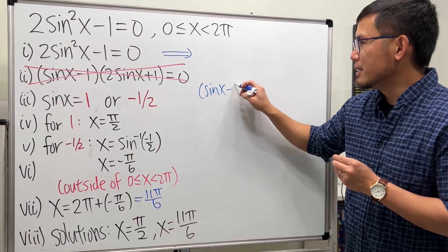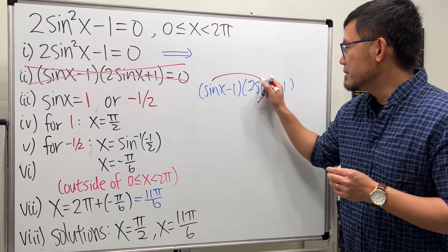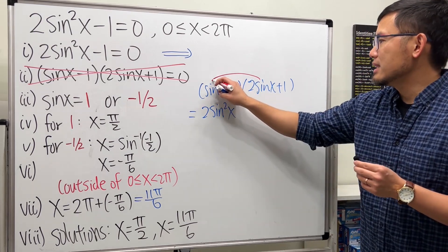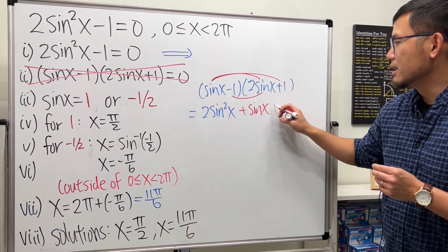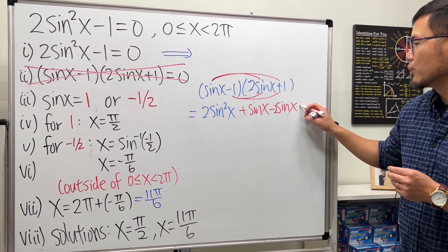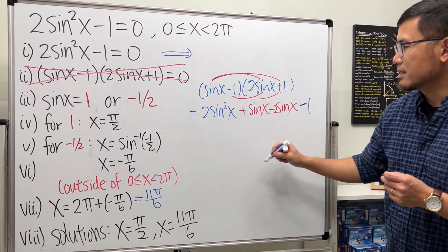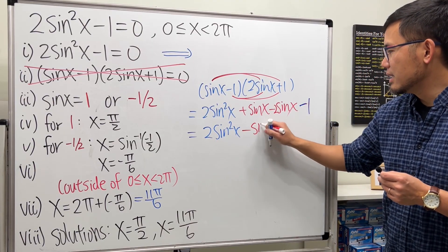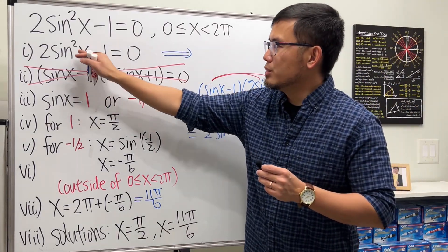If you expand sine x minus 1 times 2 sine x plus 1: this times this gives 2 sine squared x. Then this times this gives plus sine x. Then this times this gives minus 2 sine x. And lastly, negative 1 times 1 is minus 1. The middle terms combine to sine x minus 2 sine x, giving minus sine x. So expanding gives 2 sine squared x minus sine x minus 1, which is not the original expression.